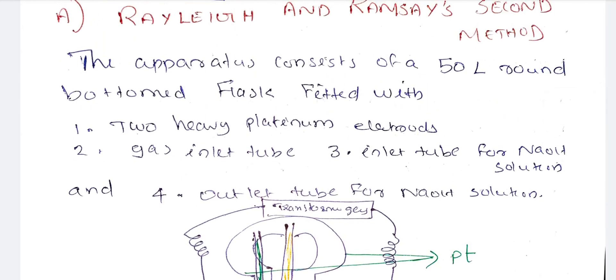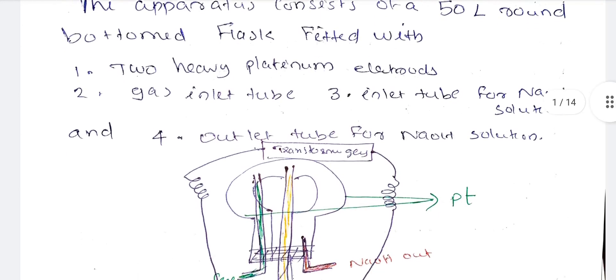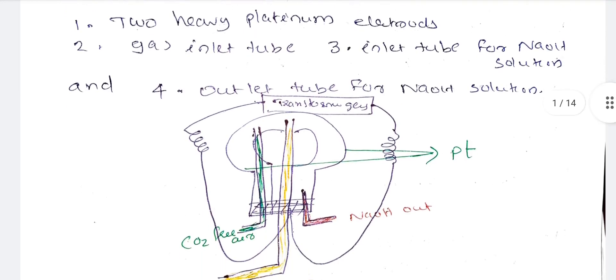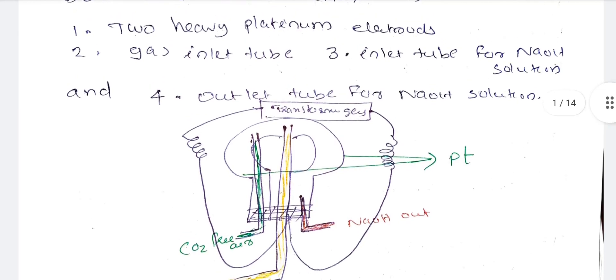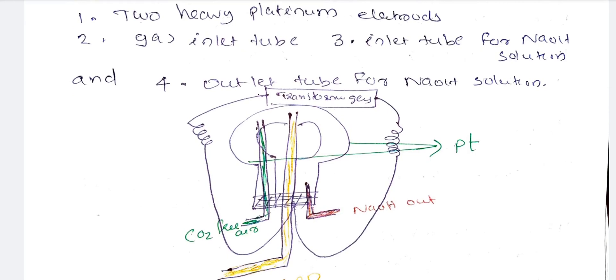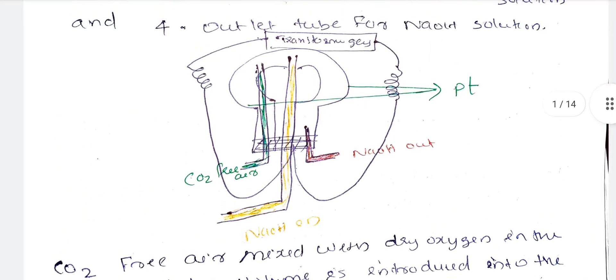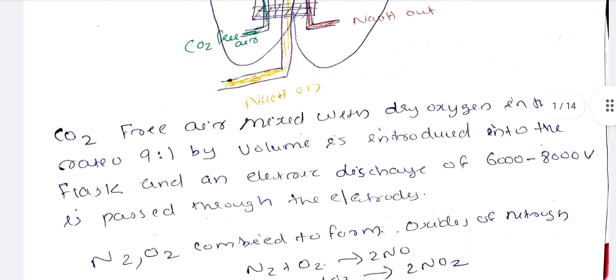The apparatus consists of a 50-liter round-bottomed flask fitted with two heavy platinum electrodes, a gas inlet tube, and an outlet tube for NaOH solution. There are three components: a gas inlet, a NaOH solution inlet, and an outlet.